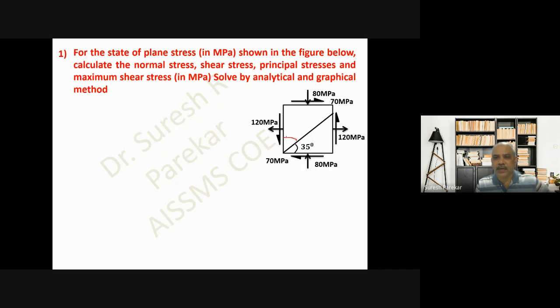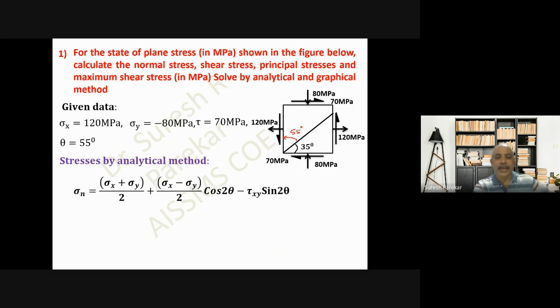We have θ equal to 55 degrees. Now we will substitute the values: σx = 120, σy = -80, τ = 70, θ = 55. Analytical method: σn = (σx + σy)/2 + (σx - σy)/2 cos(2θ) - τxy sin(2θ).